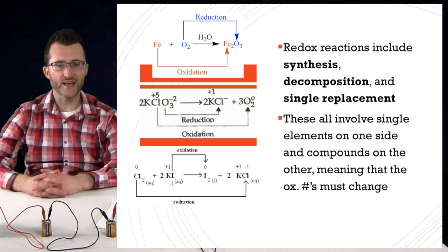Redox reactions include synthesis, decomposition, and single replacement — these all involve single elements on one side and compounds on the other, meaning oxidation numbers must change. For Regents exam questions asking which of the following is a redox reaction: don't assign oxidation numbers to everything. Instead, look for an element that is by itself on one side of the equation — its oxidation state must be zero — and in a compound on the other side — its oxidation state must be nonzero. If you see that, you know the oxidation number changed and you have a redox reaction.